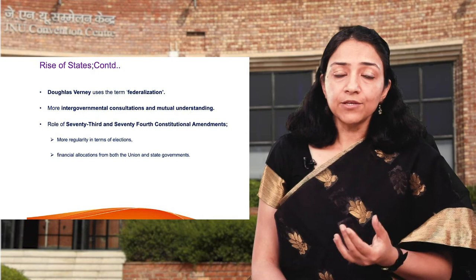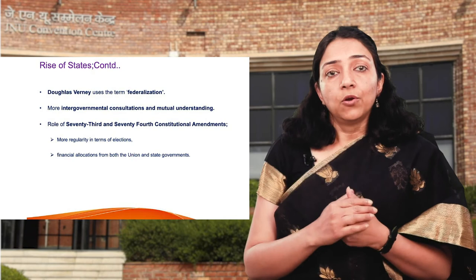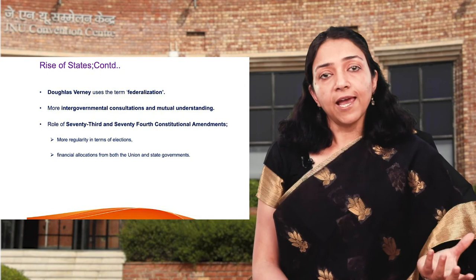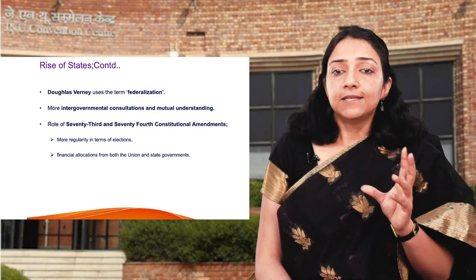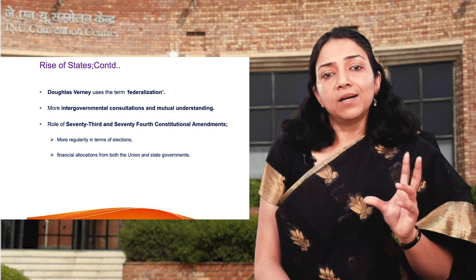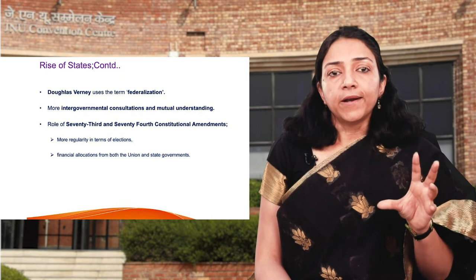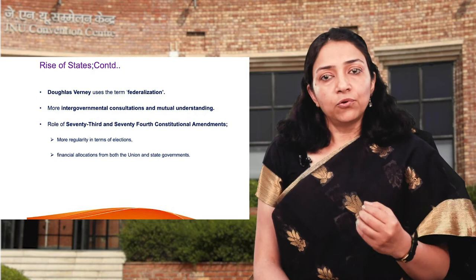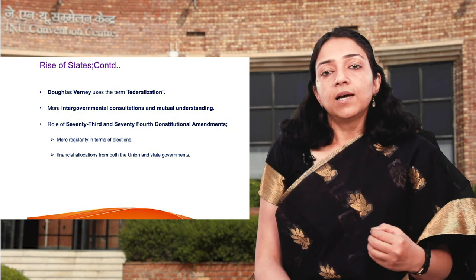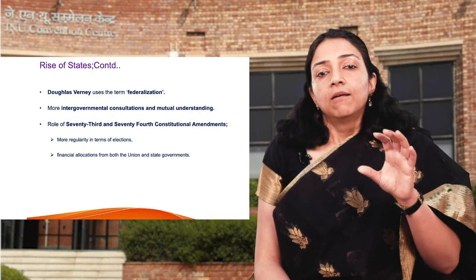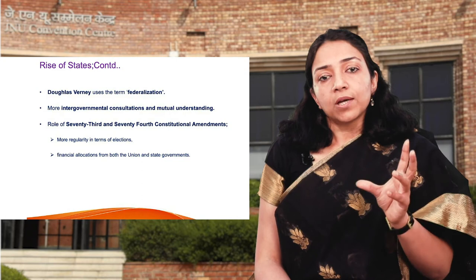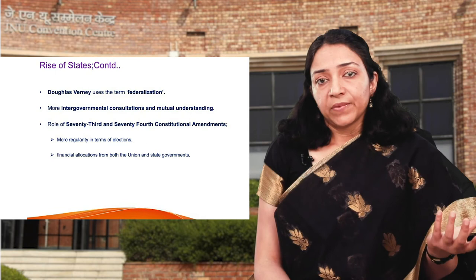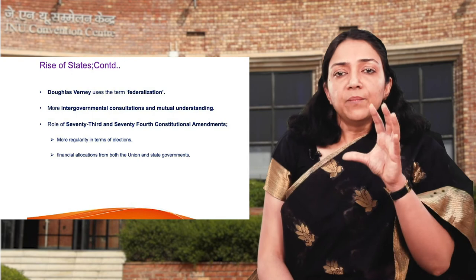We also find a new notion of divided government, as two sets of coalition parties were ruling the two houses of parliament, with different parties at the centre and in the states. This initiated a process of intergovernmental negotiation and mutual understanding in important decisions. The initiation of the 73rd and 74th Constitutional Amendments also contributed to the localization of politics, as elections became more regular and fiscal allocation became easier for local bodies from both the centre and state governments.